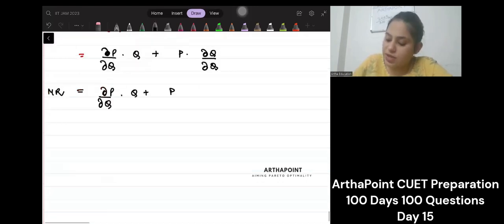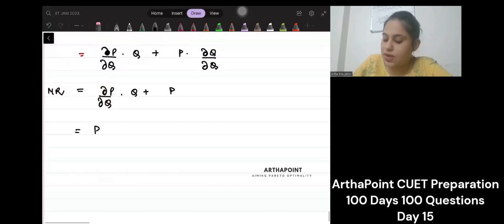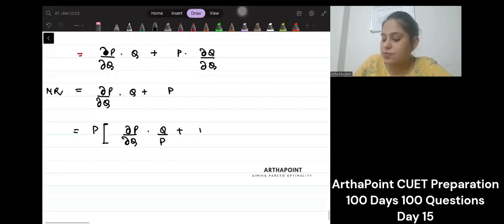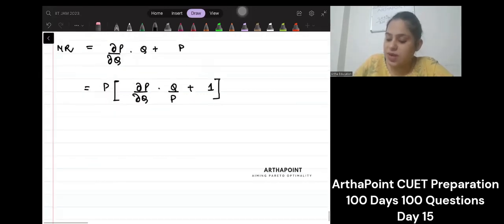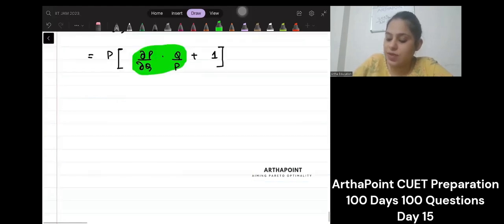What you can do is you can take P common. So you will get how P changes as Q changes into Q by P plus 1. And if you notice this part, this is the inverse of elasticity, right? So I will get this as P times 1 plus 1 by E.